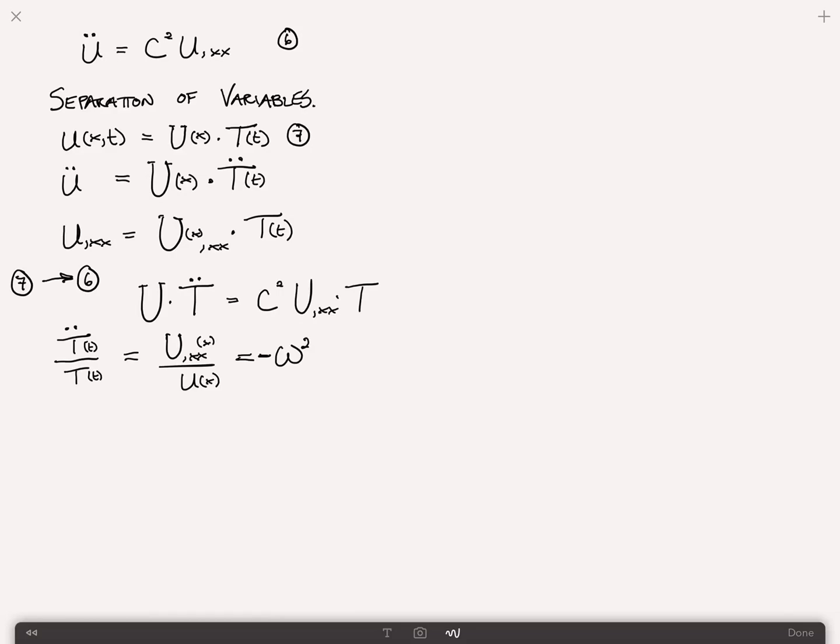What this does is it converts our partial differential equation into two ordinary differential equations. The first says that T double dot plus omega squared T equals zero. Call that equation 8. And for u, we get u comma xx plus omega squared over c squared u equals zero.